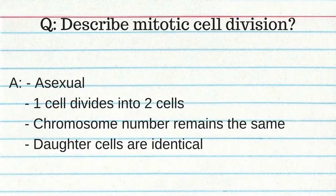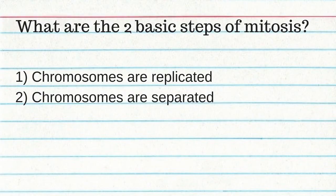Describe mitotic cell division: it is asexual — one cell divides into two cells, chromosome number remains the same, and daughter cells are identical. Mitosis is division of the nucleus. The two basic steps: chromosomes are replicated, then chromosomes are separated.